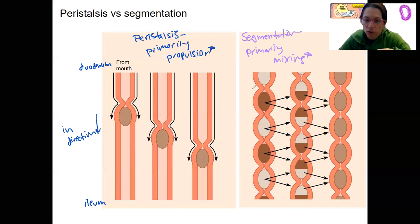Here, non-adjacent segments are going to contract at the same time and then relax. This moves food forwards and backwards. So here this one's relaxed and here it's contracted. Relax, contract. So this alternation of contraction or relaxation is going to allow food to mix with all the intestinal juices.